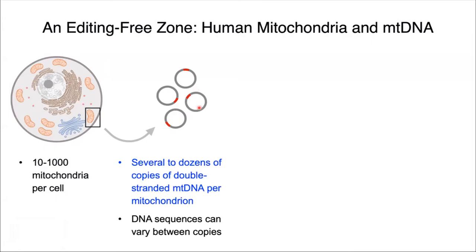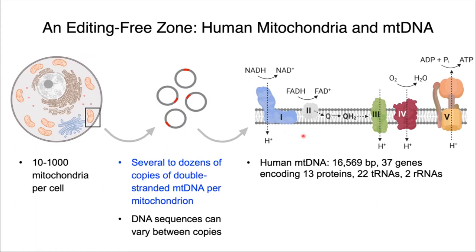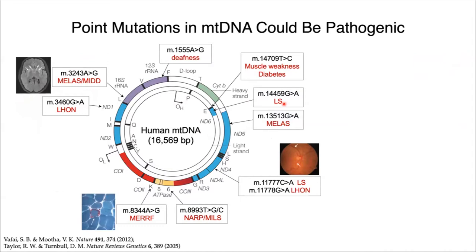Despite being only 16,000 base pairs long, the mitochondrial DNA encodes for essential protein and RNA components that are important for mediating energy production within a cell. Because of the very oxidative environment within the mitochondria, as well as the low fidelity of the mitochondrial DNA polymerase, mutation rates in the mitochondria tend to be higher than in the nucleus.